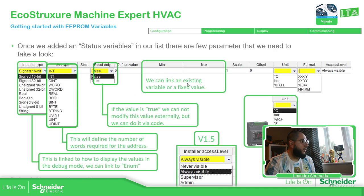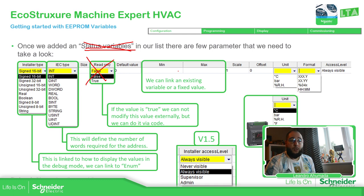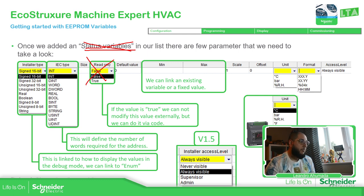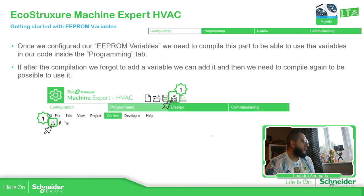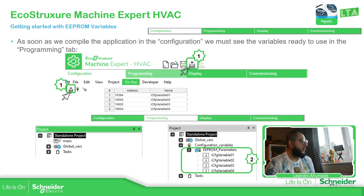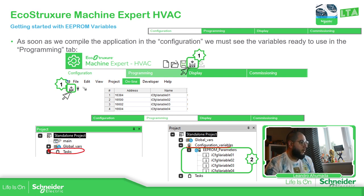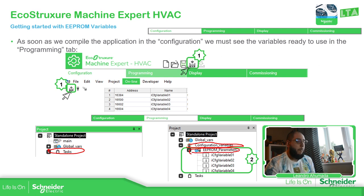You can link a variable or use a fixed value for min/max — either is fine. The installer access level is new in version 1.5; it doesn't exist in previous versions, so I'll create a dedicated video for it. Once all values are created, just compile the project. After compiling, you should see a new folder in the project called 'Configuration Variables' and importantly a subfolder called 'EEPROM Parameters'.